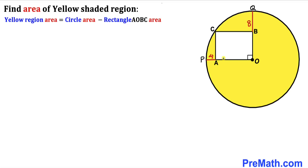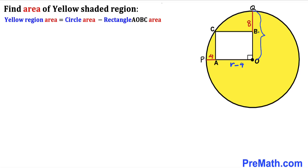PO is the radius of this circle. Let's label it as lowercase r. Since PA is 4, the distance AO is r minus 4. Likewise, OQ is also radius r, and since QB is 8, the distance OB is r minus 8.